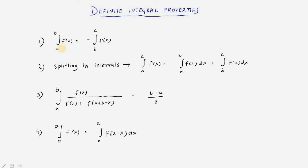The first property is: integral from a to b of f dx equals minus integral from b to a of f dx. The interesting point is that the lower limit is now the upper limit, whereas the upper limit has become the lower limit.